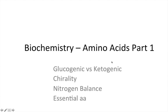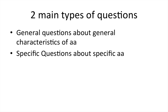Hello everybody. We're going to be doing a video series on amino acids — it's going to be two parts, and this is part one. On the test, you're going to see two main types of questions: general questions covering general characteristics about all the amino acids, and very specific questions about specific amino acids. This part one video is all about the general characteristics, and part two is going to focus on specific amino acids.